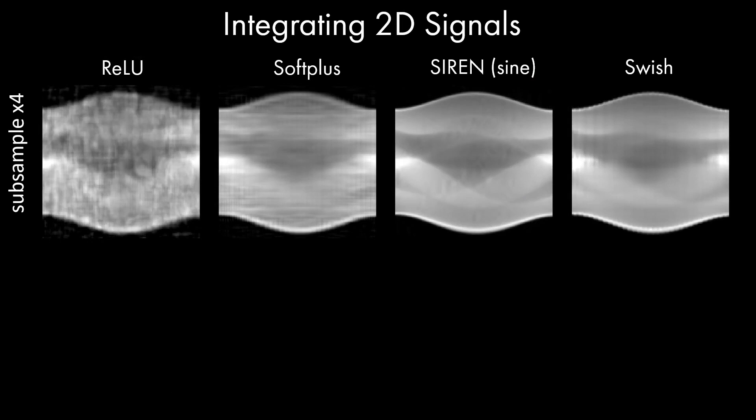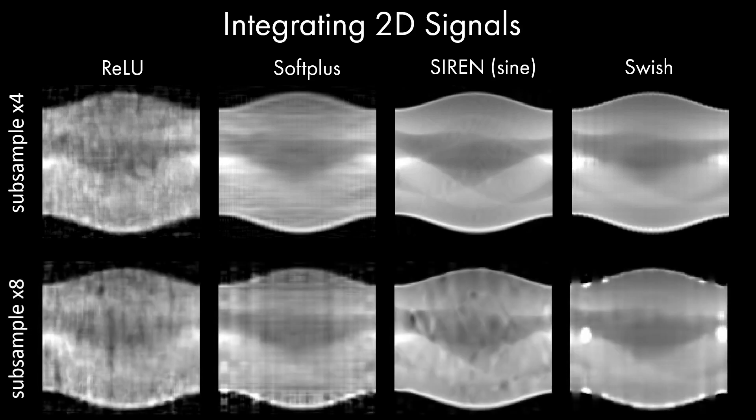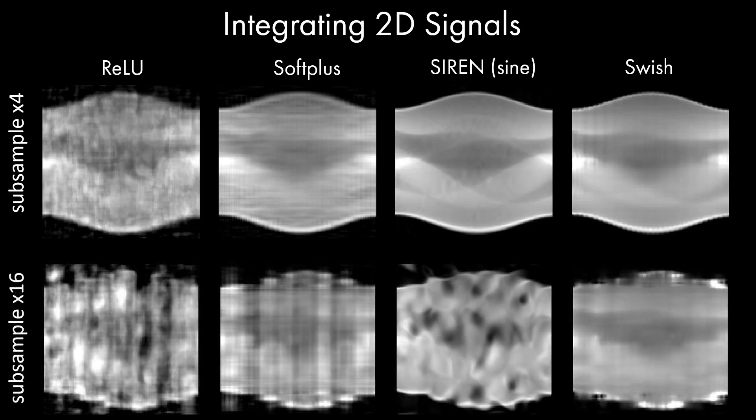Since the grad network contains the derivative of the activation function used in the integral network, the choice of activation function has a large impact on performance. We find that smooth nonlinearities, such as swish, have better fitting and generalization properties with AutoInt than sine, softplus, or relu, especially for sparse supervision of 8 times subsampling, or 16 times subsampling.